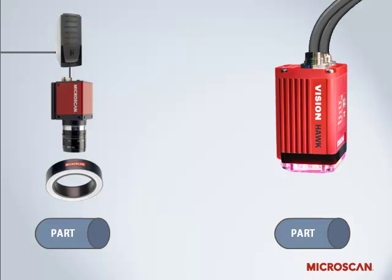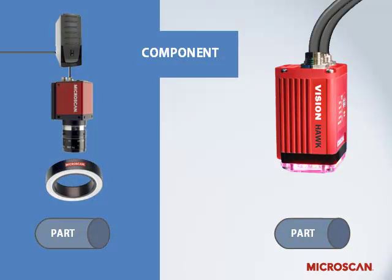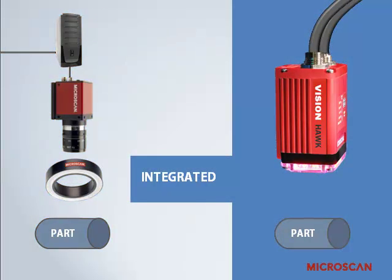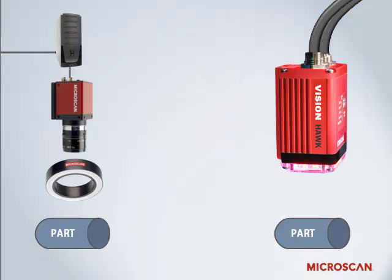Here you can see two examples of different types of machine vision systems. On the left is a system made up of assembled components, which includes a PC and a camera, along with external lighting to illuminate the part. On the right is an integrated system, or smart camera, where all of these components are built into a single device. Choosing the right configuration depends on the requirements of your application.